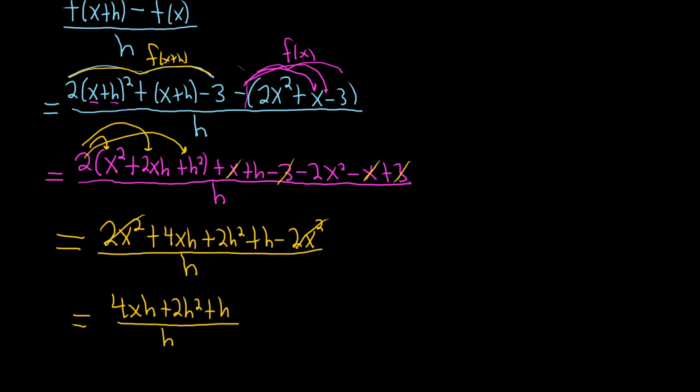At this point, everything in your numerator should have an h. If you have something that doesn't have an h, you messed up. So now we can pull out an h.